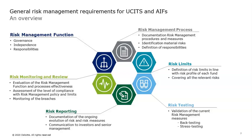Hence, the risk management function, as its name suggests, should be set with appropriate resources and clear responsibilities. It is critical that this function is easily and operationally independent from other operating units. The function is responsible for identifying all risks that funds are exposed to, defining measures and indicators to follow the level of these risks, defining internal limits for these indicators to identify any deviation from the target profile, and implementing reporting in order to keep decision makers and key stakeholders informed about risk adherence and establish appropriate escalation channels. This task is achieved through a set of human and technical resources documented in the risk management process and policies. Naturally, the entire process itself has to be reviewed to assess its effectiveness.